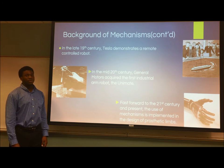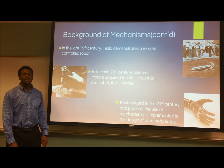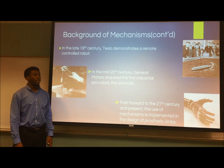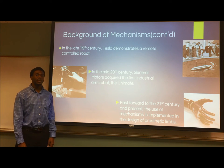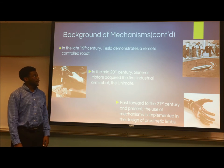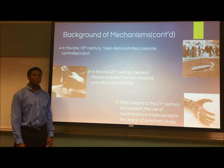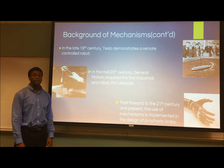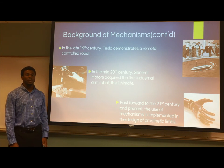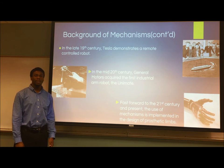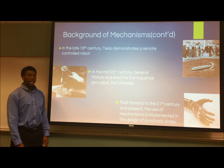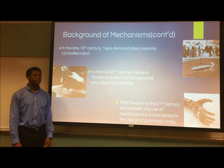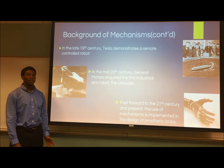Fast-forwarding to the 19th century, we can see that mechanism development plays a contributing role in the development of robotics. In the top right is Nikola Tesla demonstrating his fabrication of a remote-control robot. Speeding up to the mid-20th century, General Motors acquires the first industrial robot arm, the Unimate. This represents a fast improvement from the simple lever constructions of primitive man. In present times, mechanism development has transcended to become a vital component in the development of prosthetics.